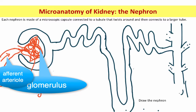Remember, afferent — we came across that word when we talked about the nervous system. The incoming sensory information is part of an afferent pathway. Now we're using afferent to mean the same sort of thing: it's the incoming blood flowing into this tangle of capillaries called the glomerulus. It turns out there's also an efferent arteriole.